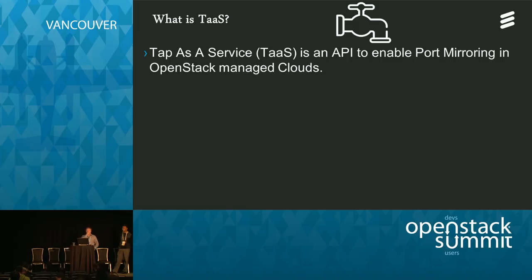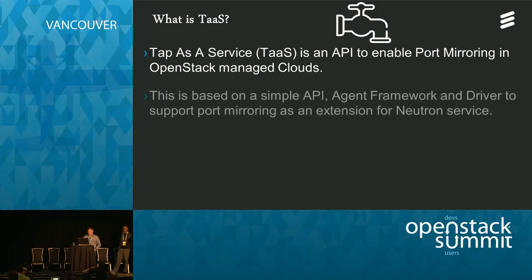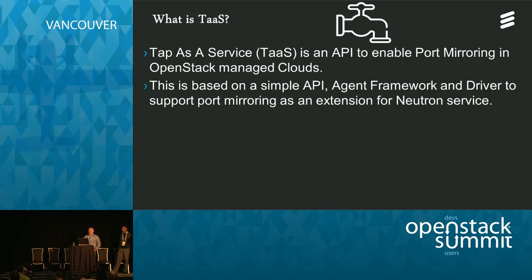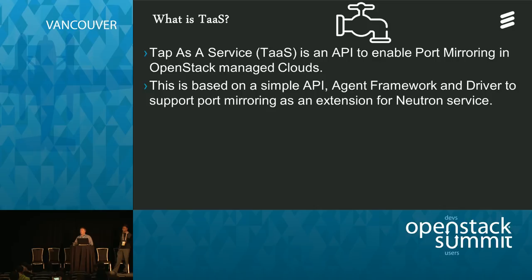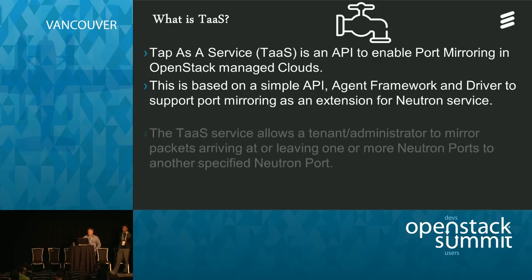TAS is an API to enable port mirroring — the kind you'd typically find on ToR edge-of-rack switches in enterprise environments. We're bringing this to OpenStack because now we have virtual switches, and we need port mirroring for specific instances like VMs, containers, or bare metal running OVS. It's a simple Python API with an agent framework and specific drivers. The first driver added supports Open vSwitch. It's extensible — you can add drivers for bare metal, top-of-rack, or edge-of-rack switches.